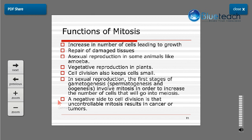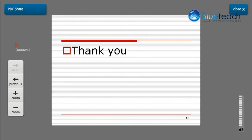If these checkpoint mechanisms fail, it results in a cancerous situation. In summary, mitosis is divided into four stages: prophase, metaphase, anaphase, and telophase, followed by cytokinesis, which involves division of the cytoplasm and allocation of organelles into daughter cells. Mitosis ultimately produces daughter cells that are genetically identical and have the same number of chromosomes as the parent cell.